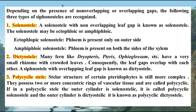Siphonostele is also divided into different types based on overlapping or non-overlapping gaps. These are solenostele, dictyostele, and polycyclic stele. A solenostele is a stele with non-overlapping leaf gaps. A dictyostele is a stele where the stele is broken into small units. Polycyclic stele is a stele where there are more than one concentric ring of vascular bundles, one after the other.